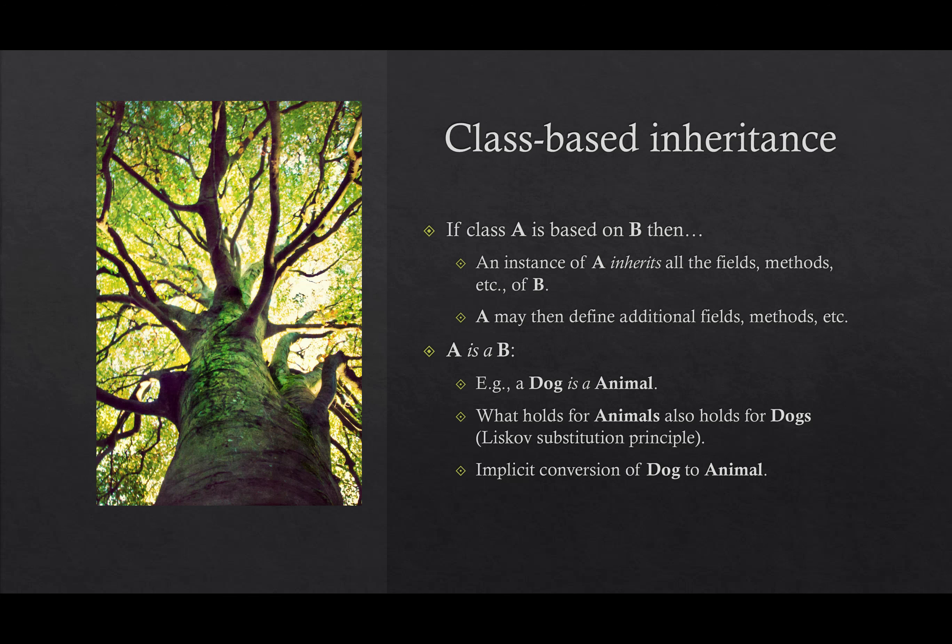There's also a logical, conceptual way of thinking about it: A is a B. If A is based on B, then A is a B. For example, if we have dog as a derived class of animal, then a dog is an animal. What holds for animals also holds for dogs, because the base class animal defines what is common to all of the derived classes — dogs, cats, cows, humans, and so on. This is called the Liskov substitution principle, because the idea is that you can substitute an instance of the derived type anywhere where the base type is expected, since the derived object is an instance of the base type as well.